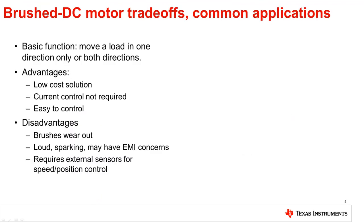Brush DC motors are a simple and low-cost solution for load actuation in many different applications. On top of being generally cheaper than other motor types, Brush DC motors are very easy to control and do not require current control in most applications. Some disadvantages include limited lifetime of the motor brushes, noise, sparking, and possible EMI concerns. Brush motors may not be suitable for some environments where sparks or brush dust is a concern. If position or speed control are required in the system, then additional circuitry or sensors must be used.